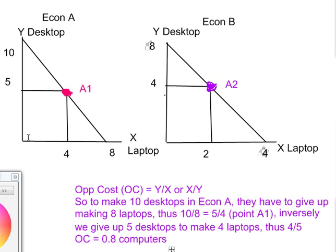And if they specialize in laptops, eight laptops can be made. And here, economy B or think of it as a factory, the maximum that can be made, or if they specialize in desktops, eight can be made, and specialize in laptops, four laptops could be made.